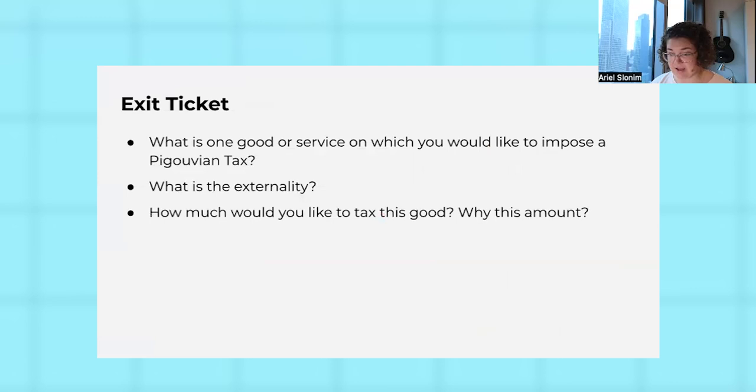Then we have an exit ticket for you. Think about what's a good you would like a Pigouvian tax on, and then how much would you tax? This is foreshadowing some of the problems with setting those optimal amounts.